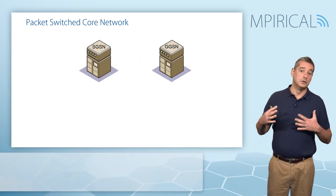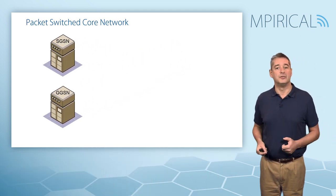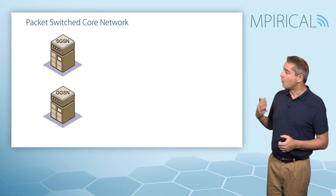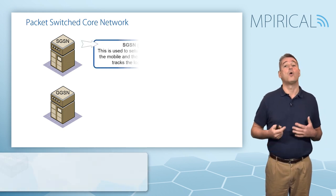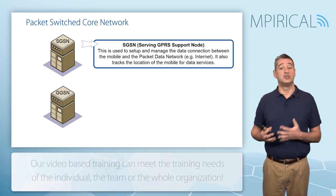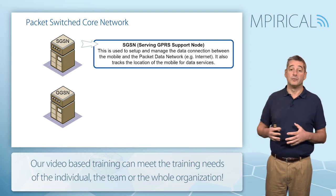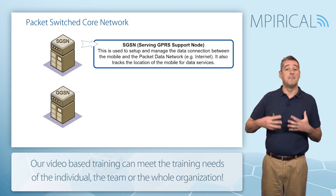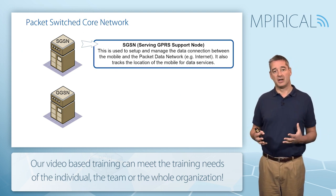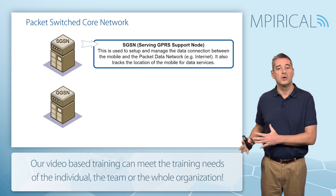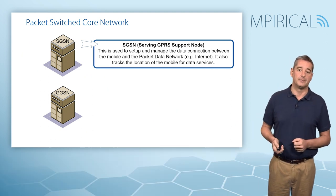Looking at the two key network elements in more detail: we have the SGSN, or Serving GPRS Support Node, which is responsible for the setting up and management of our data connection — the always-on connection we take for granted with GPRS.